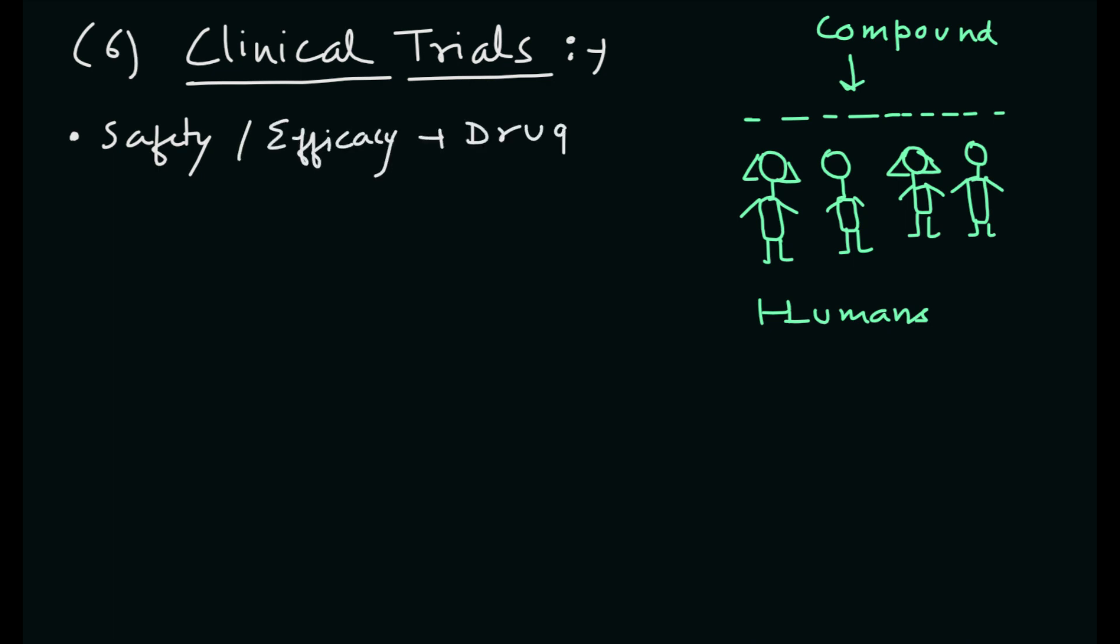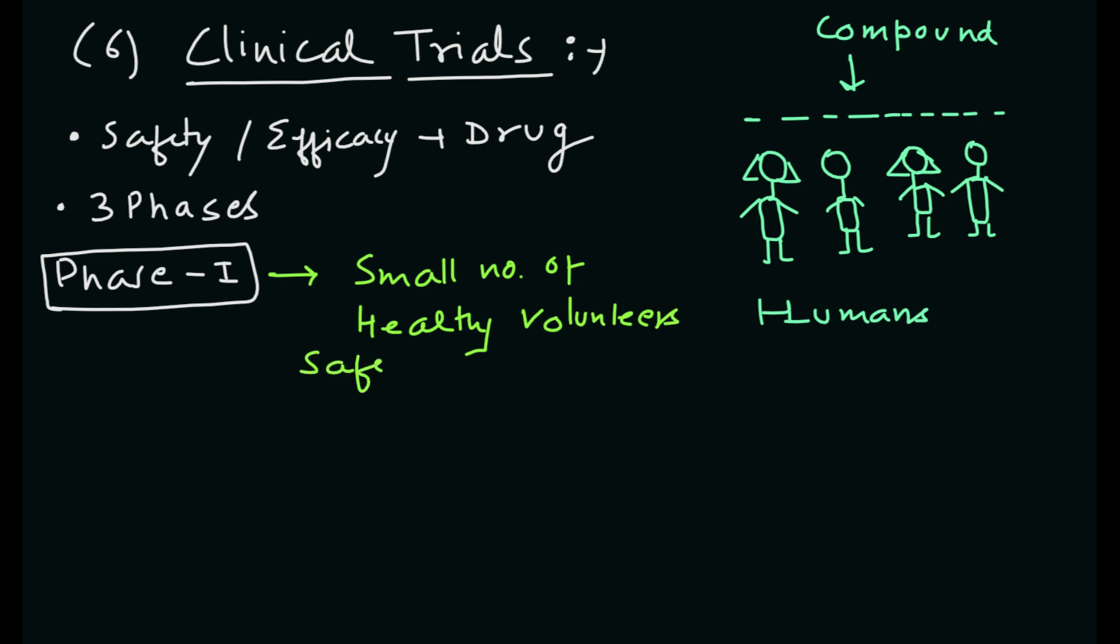The next stage is clinical trials. Clinical trials evaluate the efficacy and safety of the drug candidate in humans and are conducted in three phases. Phase 1 trials involve a small number of healthy volunteers and are designed to assess the safety and pharmacokinetics of the drug molecule. Phase 2 trials involve a larger number of patients and are designed to assess the drug's efficacy.